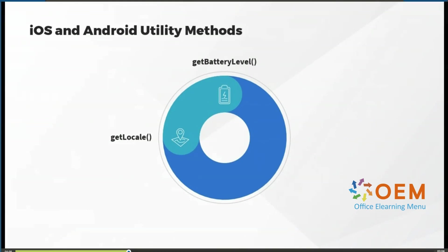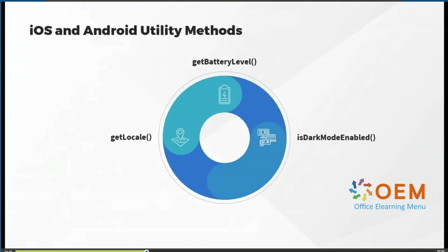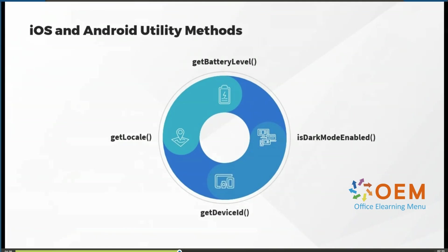Another method we can use is get_battery_level. This method will return the current battery level and the charging state, which is very useful for testing our application under different battery conditions. Another method to keep in mind is is_dark_mode_enabled, which checks if our device is currently set to dark mode, critical for verifying that our application and its elements are displayed correctly under different modes.